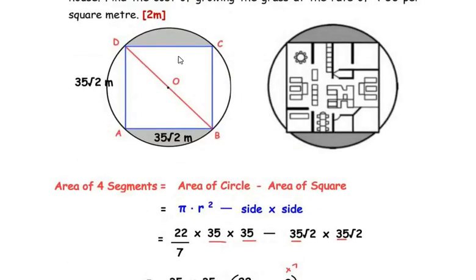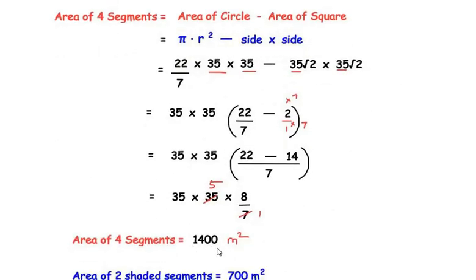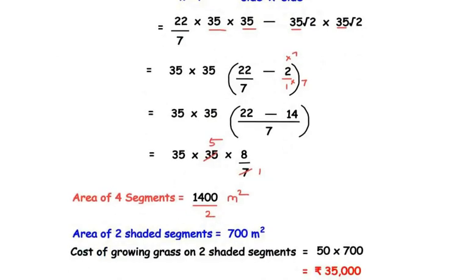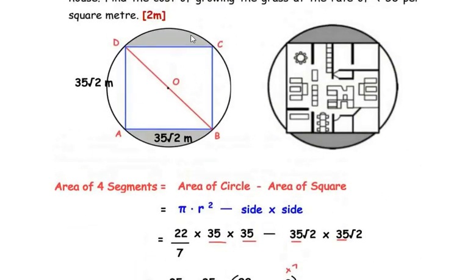Out of the total four segments, only the two segments are shaded, so we divide 1400 by 2, giving the area of the two shaded segments as 700 square meters. Now let us find the total cost to grow the grass. The cost is 50 rupees per square meter, and the area is 700 square meters. Cross multiplying, the cost of growing grass on the two shaded segments = 50 × 700 = 35,000 rupees.